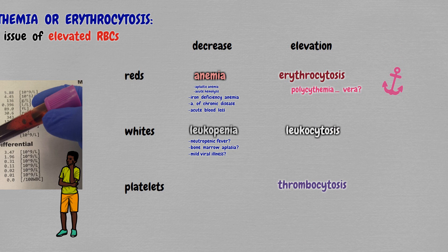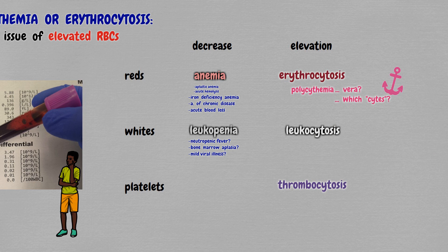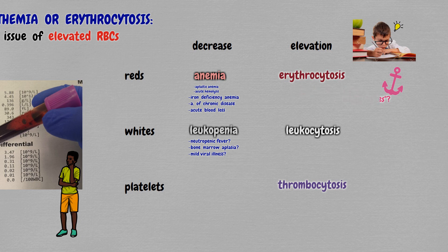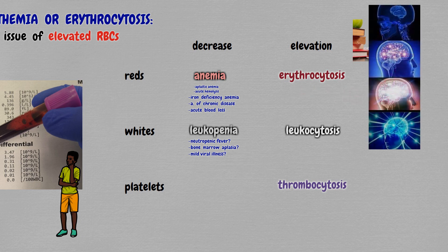Also, the name polycythemia doesn't really specify which cell line is increased — it just means lots of cells. Of course, you can learn to associate the name with this specific disorder, but we should try to simplify things so we free up brain power to use it where it's needed. We should always try to free our language of inherent biases if we want to get the clearest picture. Alright, so let's get to it.